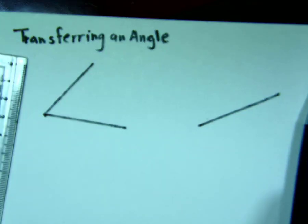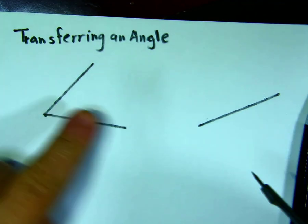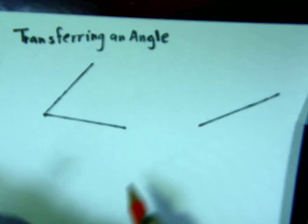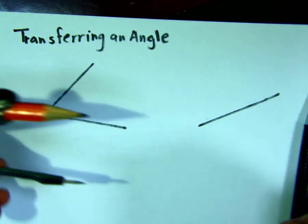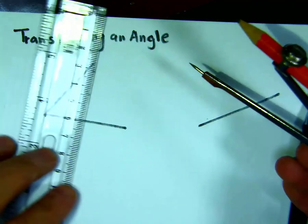Hello everyone, this is Engineer Hussam. I'm going to show you how to transfer an angle from one location to another without measuring the angle using a protractor. The only devices we are allowed to use are a compass and a ruler.